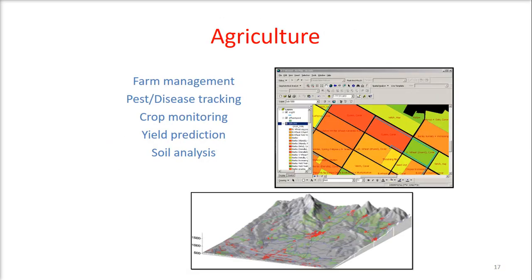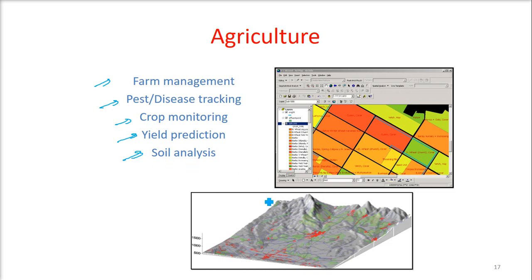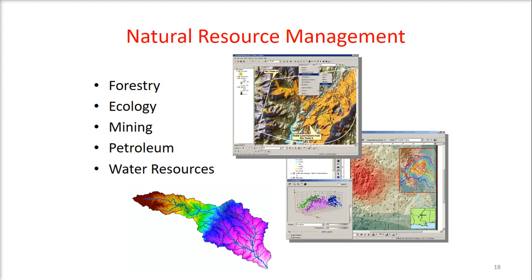I will just take you through some actual maps — the actual way how GIS works. This is agriculture. If you see the farm management, the pest disease tracking, the crop monitoring, the yield prediction, the soil analysis — all can be done through GIS software and GIS applications.